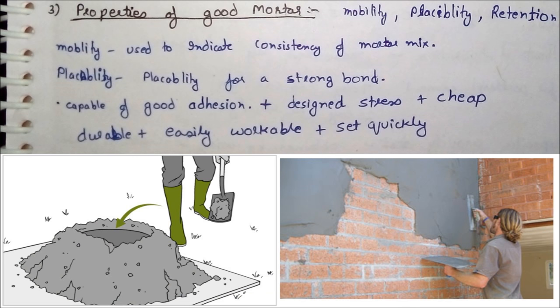Now we talk about the properties of a good mortar mix. Important properties are mobility, placeability, and retention. The first one is mobility. Mobility indicates the consistency of the mortar mix, which may range from stiff to fluid. Mobility depends upon the composition of the mortar. We make the mortar mix sufficiently mobile so that we can mold it in any form or shape.